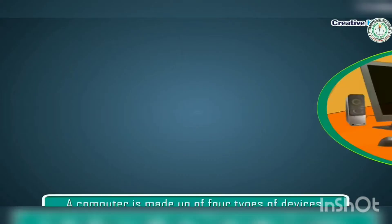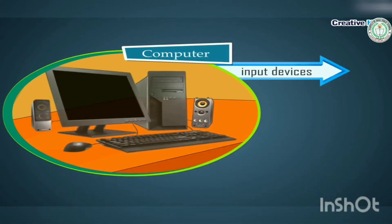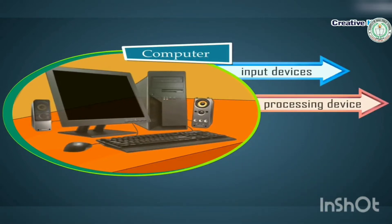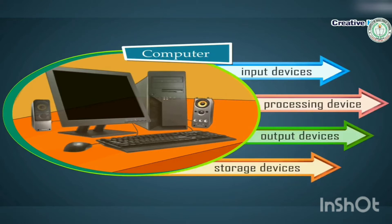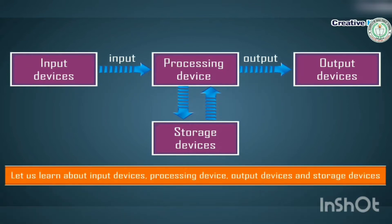A computer is made up of four types of devices: input devices, processing device, output devices, and storage devices. Look at the diagram below showing how these devices are connected to each other to form a complete computer system. Let us learn about input devices, processing device, output devices, and storage devices.